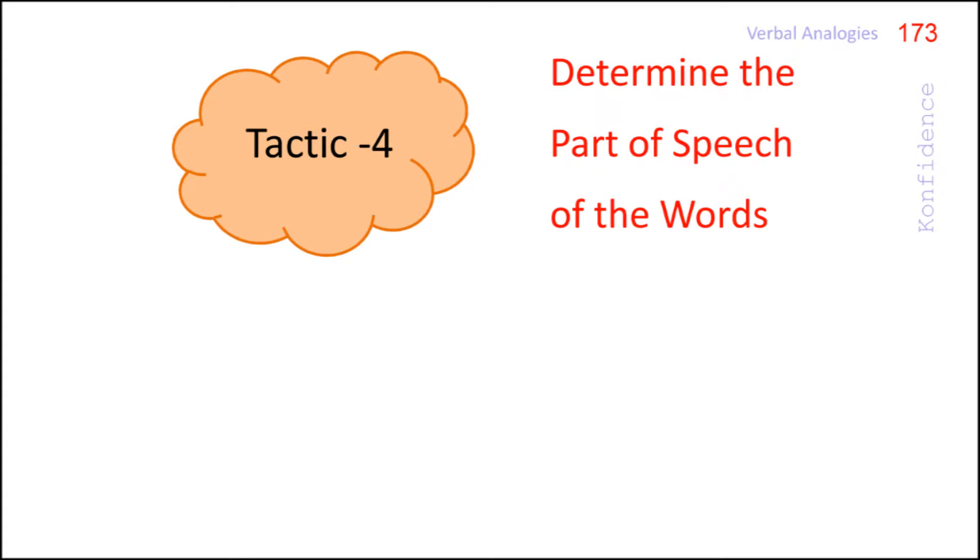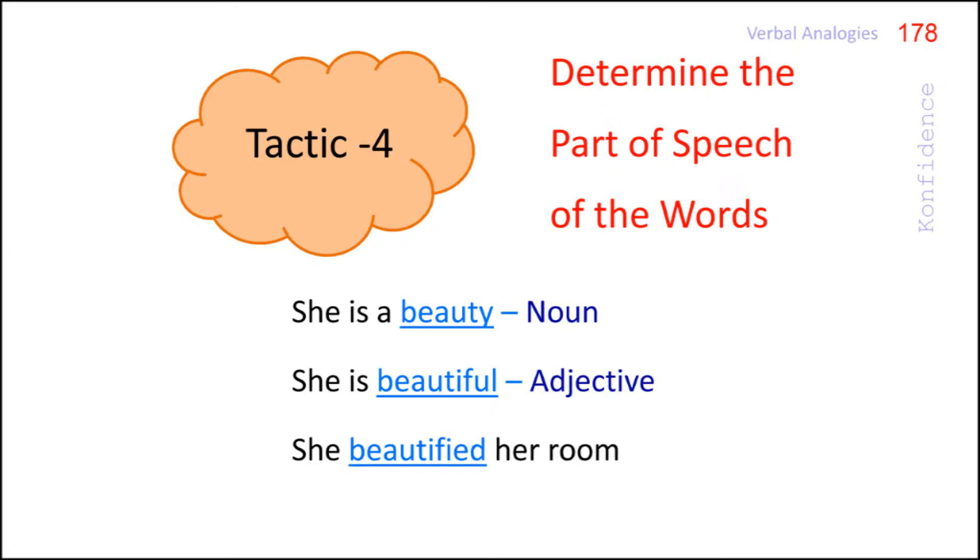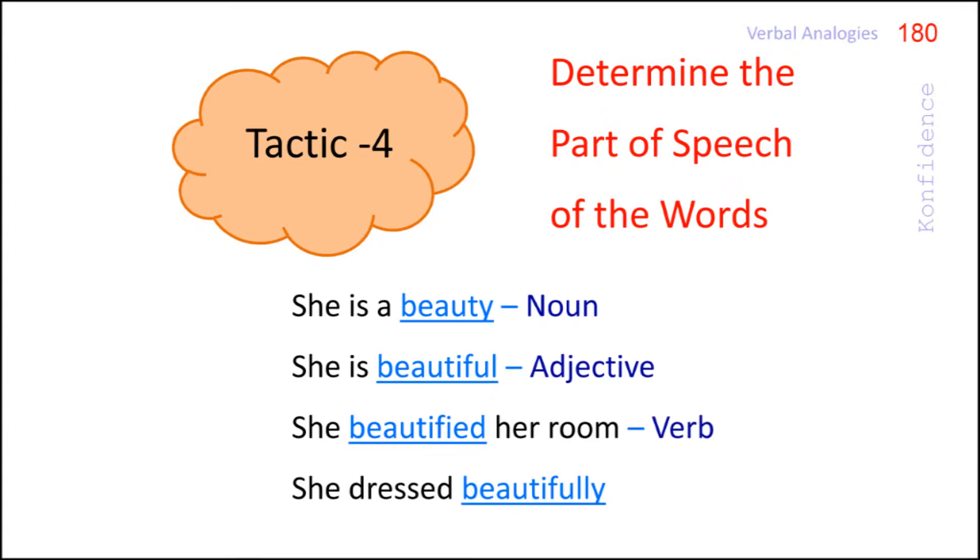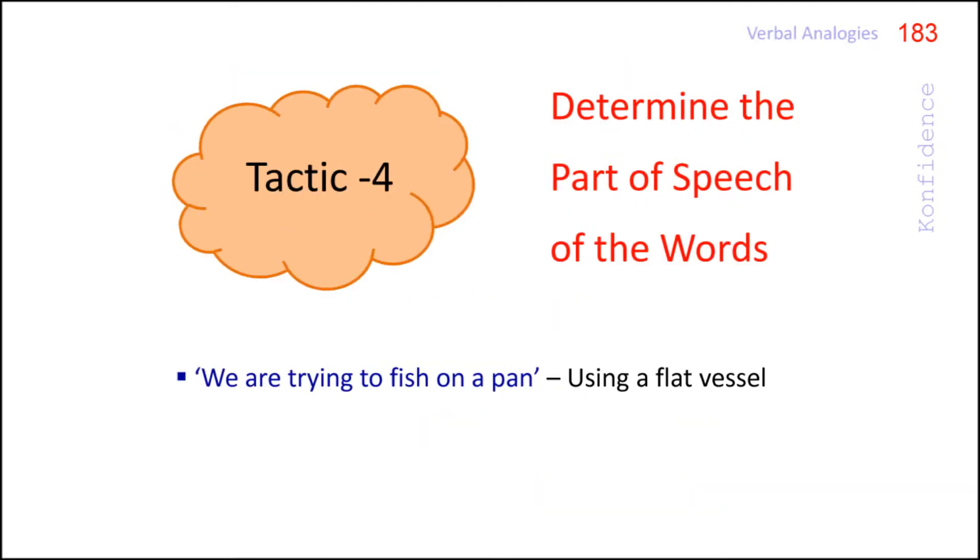In English language a word can be used in different parts of speech like noun, adjective, verb and adverb. For example in the sentence she is a beauty the word beauty is a noun. But in she is beautiful the adjective form of the word beauty is used. In she beautified her room the underlined word is in verbal form. Look at the sentence she dressed beautifully. Here beautifully is an adverb, a word that tells us something about the verb or action.